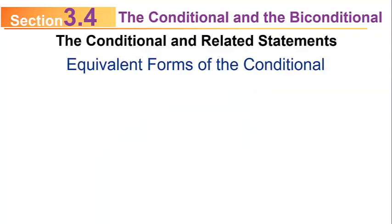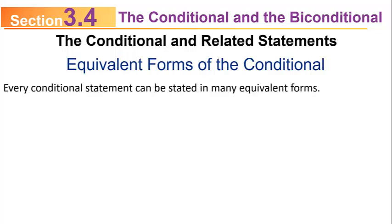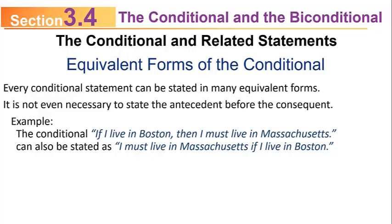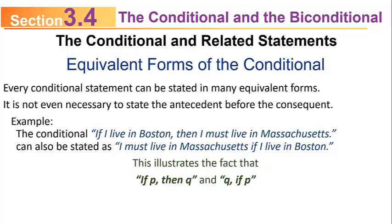I want to begin by talking about some equivalent forms of the conditional statement. Every conditional statement can be stated in many equivalent forms. It's not even necessary to state the antecedent before the consequent — the if part before the then part. For example, if I live in Boston, then I must live in Massachusetts can also be stated as I must live in Massachusetts if I live in Boston. This illustrates the fact that if P then Q and Q if P are equivalent ways of writing the same conditional statement.